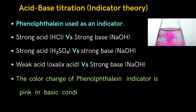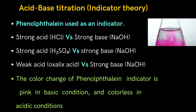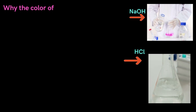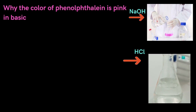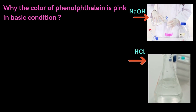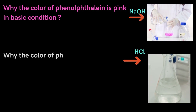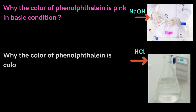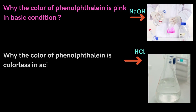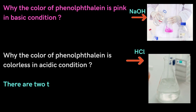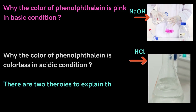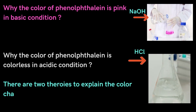The color change of the indicator is pink in basic condition and colorless in acidic conditions. The question is: why is the color of phenolphthalein pink in basic condition at the endpoint of titration, and why is it colorless in acidic condition? There are two theories to explain the color change: first, Ostwald's theory, and second, the modern quinoid theory.